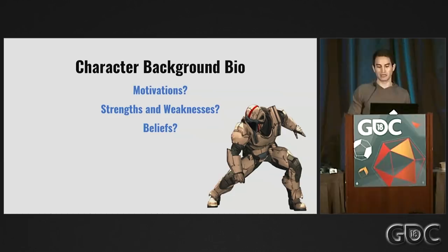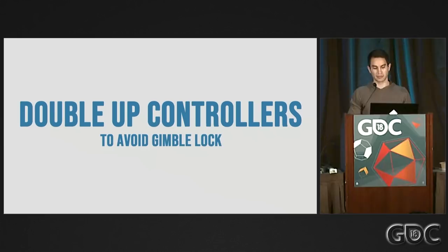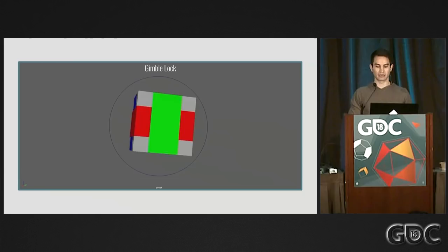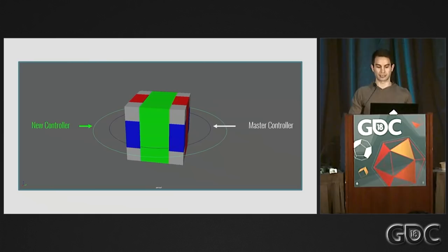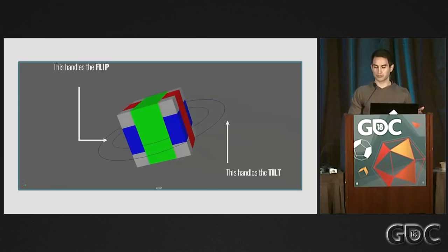Second tip: double up on controllers to avoid gimbal lock. If you love doing animations full of flips and spins but only use one controller, you might notice something unnatural — this is because of gimbal lock, which gives priority to an axis while rotating an object. If you're having gimbal lock issues and can't send it back to a rigger, try this: create a new null circle and scale it around your character, then parent the original master controller to the new controller. Use one controller for all the flips and the other for all the spins. Because you're dedicating each controller to rotate in only one direction, gimbal lock shouldn't be a problem anymore.